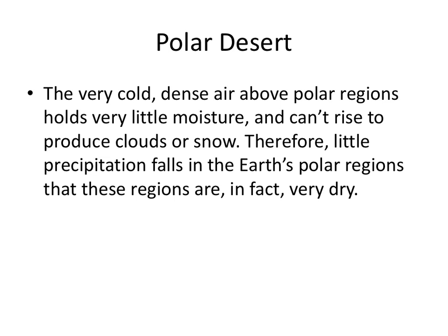The last one is the polar desert — kind of self-explanatory. We're in the polar region, so it's very cold. This is where Antarctica comes in. Very cold, dense air above the polar region holds very little moisture. If we can't make clouds and don't have enough moisture for precipitation, you won't get high precipitation, and the region is described as arid or as a desert. It really comes back to the air temperature being so cold it can't hold much moisture to begin with.